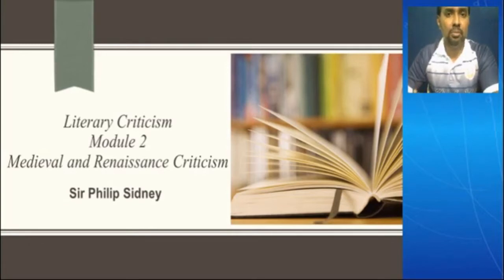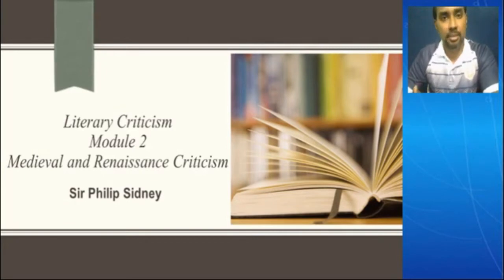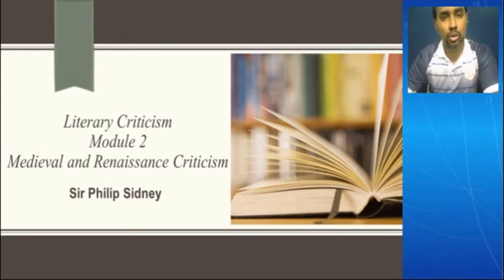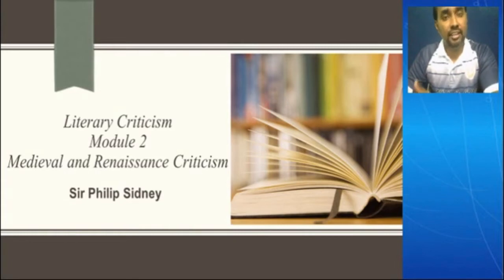We analyzed some of the important figures of the Renaissance period. We came across names like Petrarch, Scaliger, Minturno, Boccaccio, as well as the Italian commentators Robertello and Castelvetro. Castelvetro is important because he contributed the second and third unities to the three unities — it was Aristotle who spoke about unities first, but he spoke about only unity of action. We also came across the five phases through which English literary criticism developed during the Renaissance period.